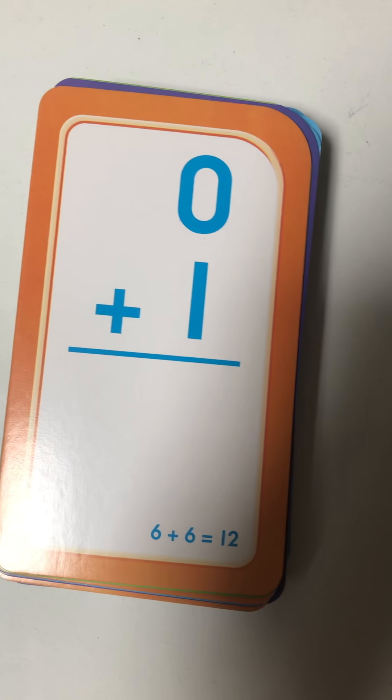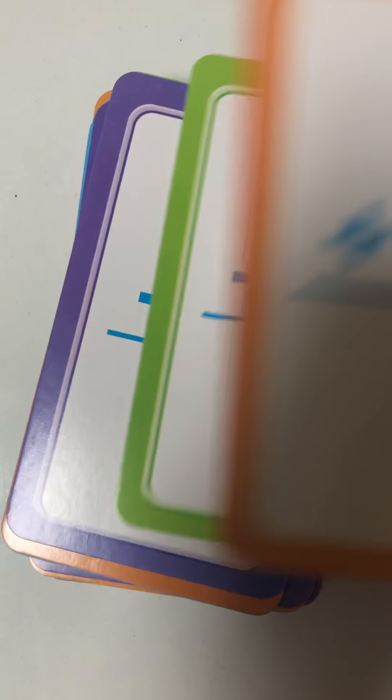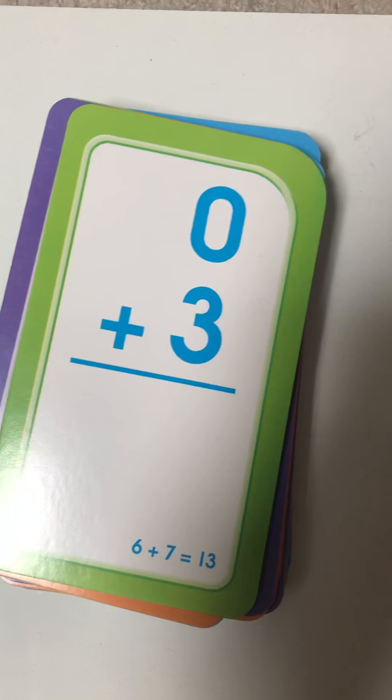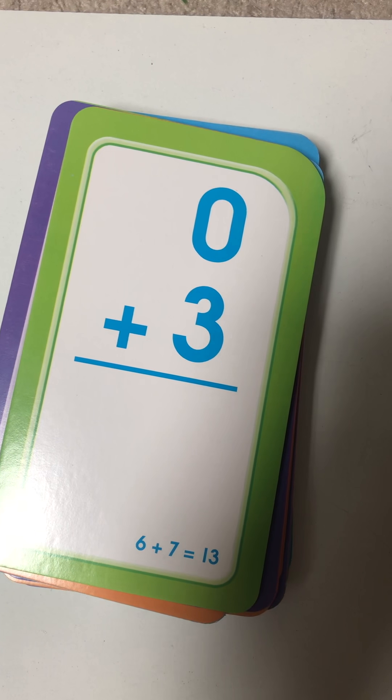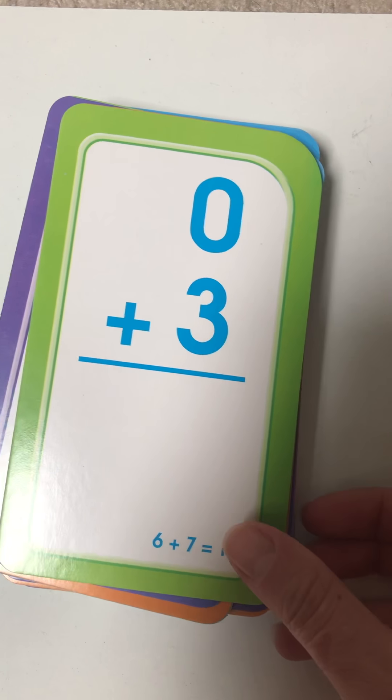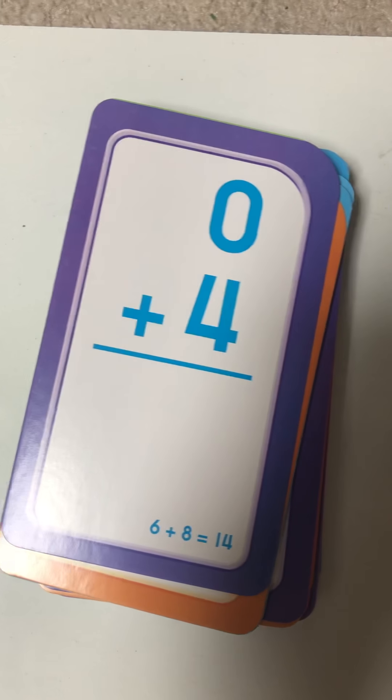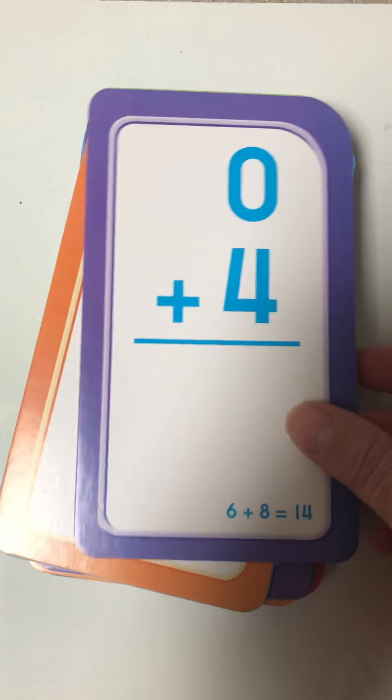Zero plus one. It's one. Zero plus three. It's three because any number plus zero equals itself. Zero plus four. You got it, it's four.